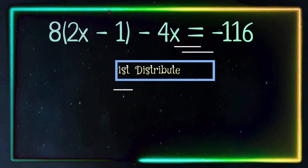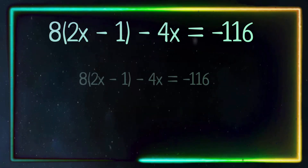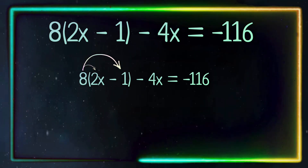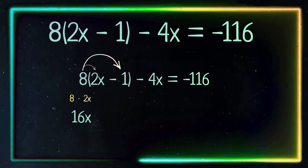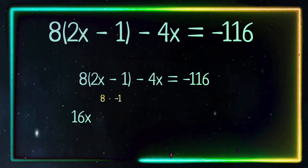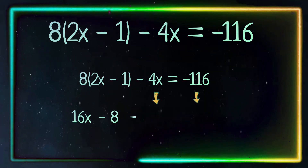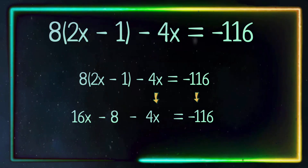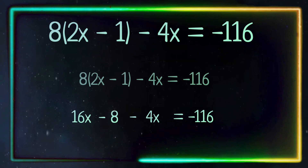First we are going to distribute the 8 to what is in the parentheses — 8 and 2x, and then 8 and negative 1. 8 times 2x equals 16x. 8 times negative 1 equals negative 8. Bring down the rest of the equation and we have 16x minus 8 minus 4x equals negative 116.